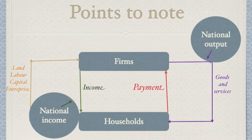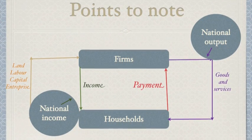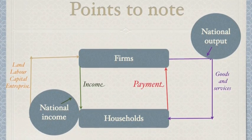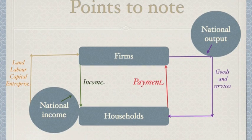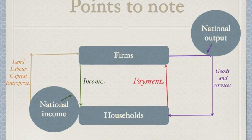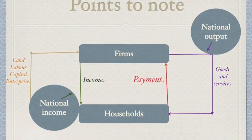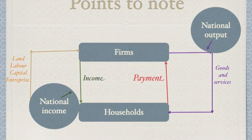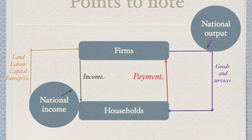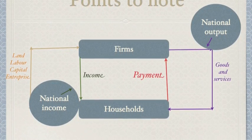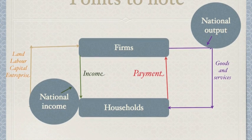One thing to note is that these arrows are incredibly important when we look at more serious models of the Circular Flow of Income. For example, from the goods and services arrow one can denote the national output, and from the rent, wage and profit arrow one can denote the national income.